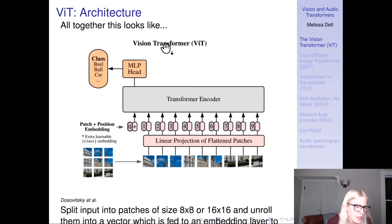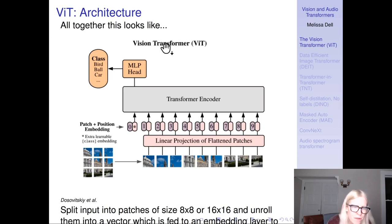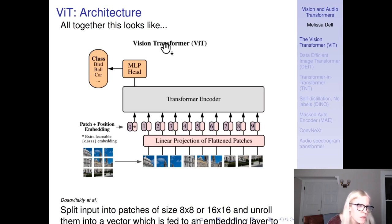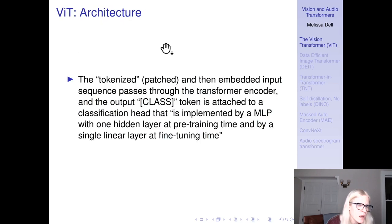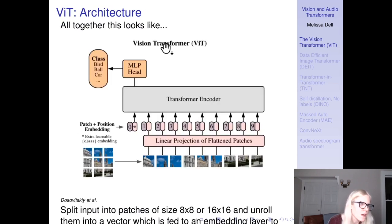In practice: you have the image split into patches — in reality 8x8 or 16x16 pixel patches. We have a linear projection of flattened patches, then add position embeddings, and those are passed to the transformer encoder — essentially a vanilla transformer architecture. Then you have that multi-layer perceptron head that outputs to your classes.